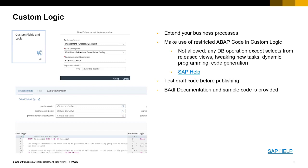Where applicable, custom logic can be added to existing business objects, allowing you to extend your business processes. It makes use of restricted ABAP code. The only restriction is against DB operations except for selecting from released views, tweaking new tasks, and dynamic programming. You can also test this code before publishing it to your production systems. Accompanying documentation and sample code is provided to help guide you.